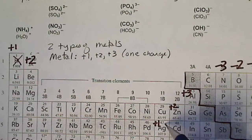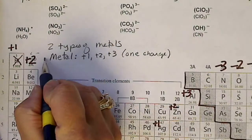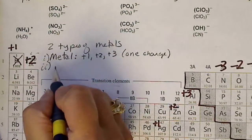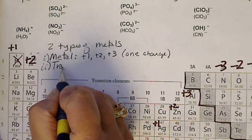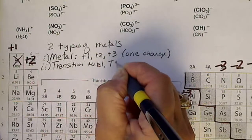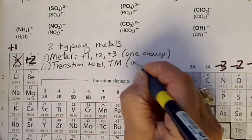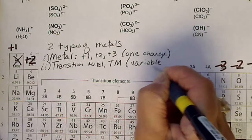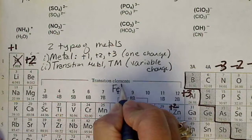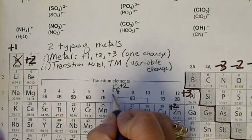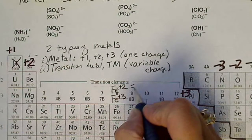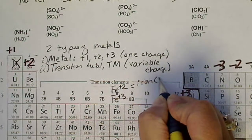The other type of metal is a transition metal — I'll abbreviate that as TM. For transition metals, the charge varies; these metals have a variable charge. For example, iron can be a plus two or a plus three. So for a transition metal, the name is going to include the charge.